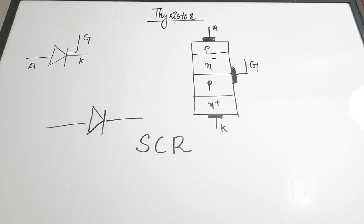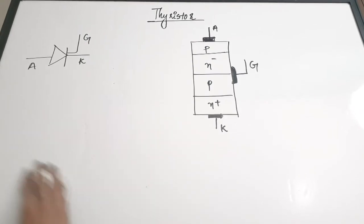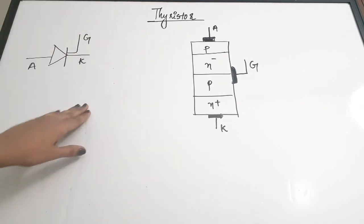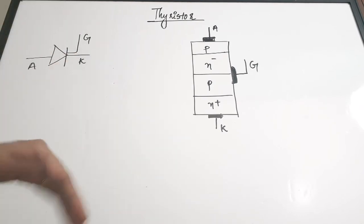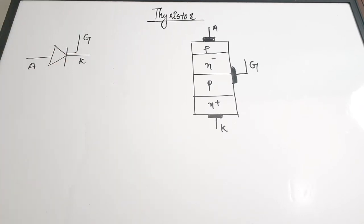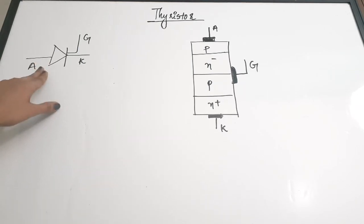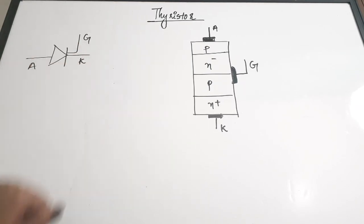The SCR is a three-terminal device. The three terminals are: anode, which is the positive side; cathode, which is the negative side; and the gate. The gate is primarily responsible for turning the device on and off, though there are other mechanisms as well, which will be discussed in the next video.